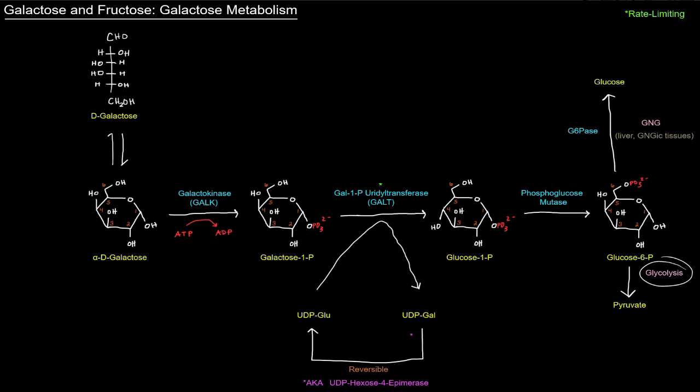Of course the pyruvate can be broken down further in the pyruvate dehydrogenase complex to give acetyl-CoA, and acetyl-CoA can be oxidized in the TCA cycle. A lot of this happens in the liver, and I think that's to some extent in the kidney as well, not sure about that, but definitely in the liver. If it happens in gluconeogenic tissues, the glucose-6-phosphate can of course be converted into glucose by glucose-6-phosphatase in those gluconeogenic tissues.